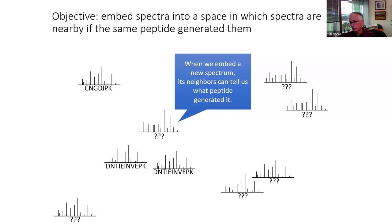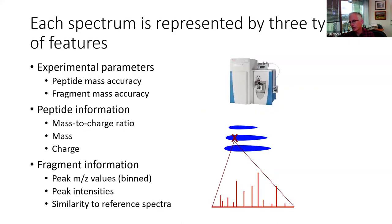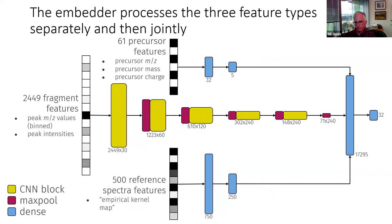We had to figure out how to represent this complicated data object as input to the neural network. We segregated our knowledge into three categories: parameters of the experiment such as instrument accuracy; information about the intact peptide from a precursor scan; and the actual fragment information, represented both by discretizing the m/z axis and by computing cosine similarities to a reference set of spectra. All three feature sets are then passed through a neural network to create an embedding.